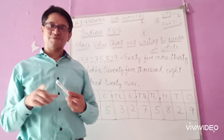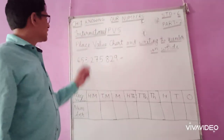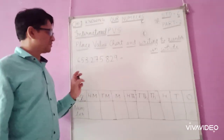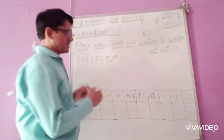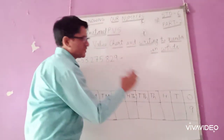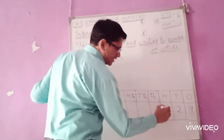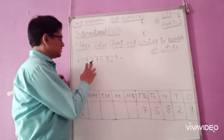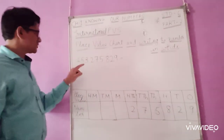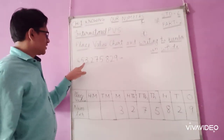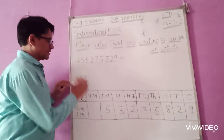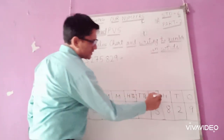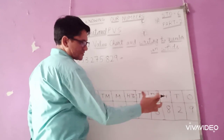Next, we will be learning about the international place value system. We have the same number: 65,32,75,829. In the international system, 9 is in the ones place, 2 in tens, 8 in hundreds, 5 in thousands, 7 in ten thousands, 2 in the hundred thousands place. In the international system, commas come after every three digits — so there are two commas.